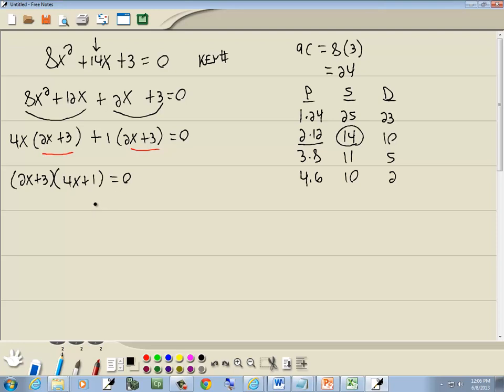Now with zero factor property, you get zero on one side, you factor the other side, you set each factor equal to zero. So I set 2x plus 3 equal to zero, and 4x plus 1 equal to zero.